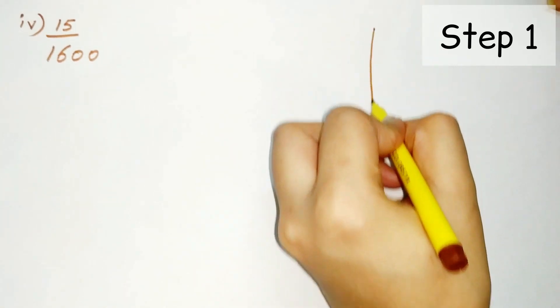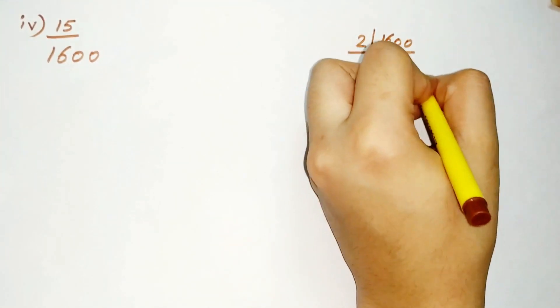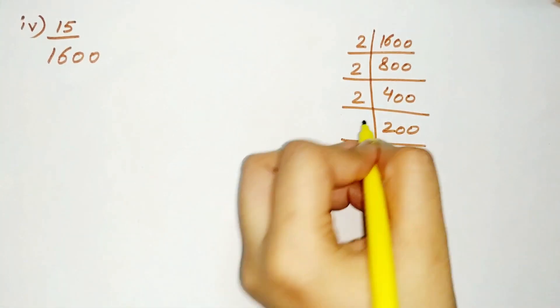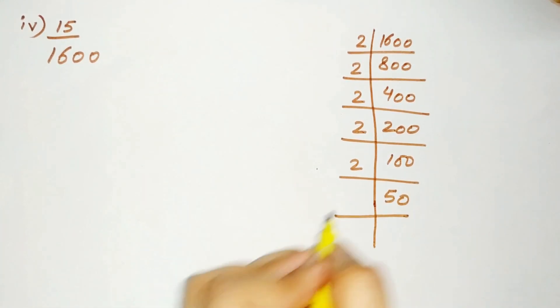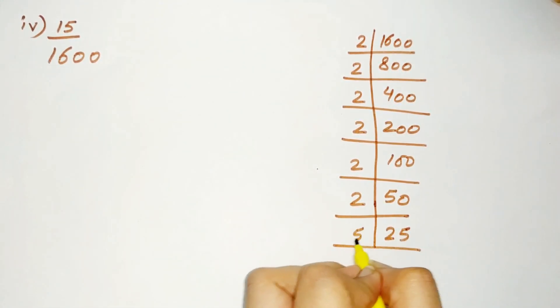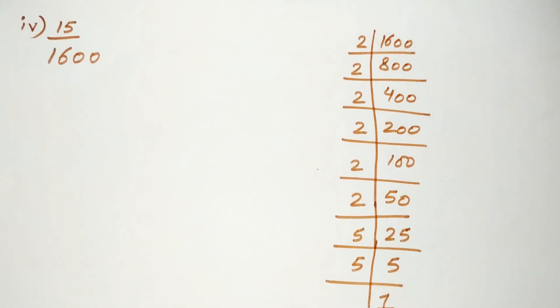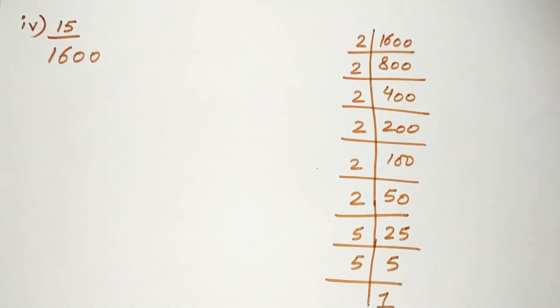The fourth part: follow the steps and find out the prime factors of 1600. 1600 is divisible by 2, giving 800; 400 is again divisible by 2; 200 is divisible by 2; 100 is divisible by 2, and so is 50. Now 25 is divisible by 5, and 5 is divisible by 5. So we can see the prime factors of 1600 have only 2 and 5. Therefore, 15 by 1600 is a terminating decimal expansion.